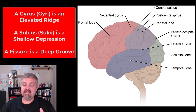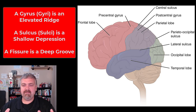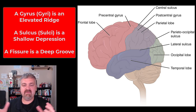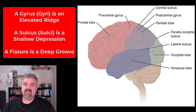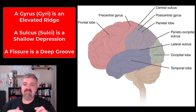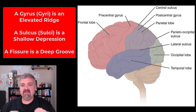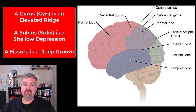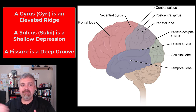The actual cortex itself has all these hills and valleys — they're there for surface area. If the brain was smooth, we would have profound mental problems. This is the only way you can cram a hundred billion neurons into such a small structure — to have this massive surface area. The little valleys or depressions are called a sulcus, or sulci in the plural. The hills or ridges would be called a gyrus, or gyri.